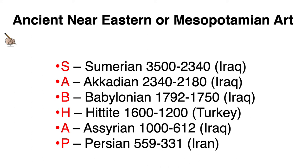Here's a list of the different ruling groups that we will be looking at: Sumerian, Akkadian, Babylonian, Hittite, Assyrian, and Persian.